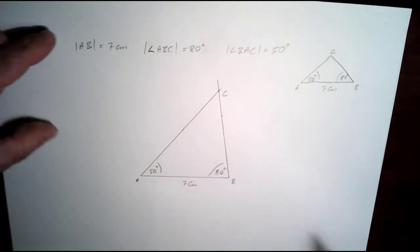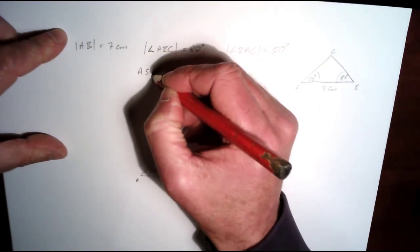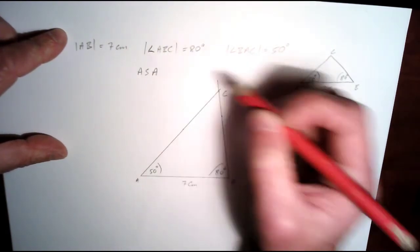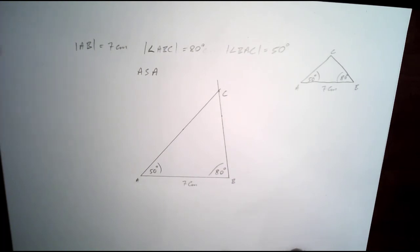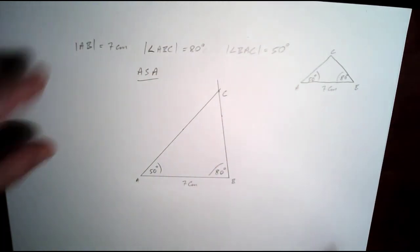So this is angle, side, angle, where we're given 2 angles and the side in between the 2 angles, 7 cm.